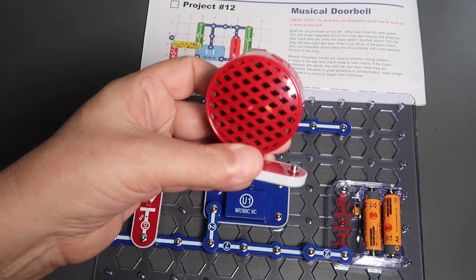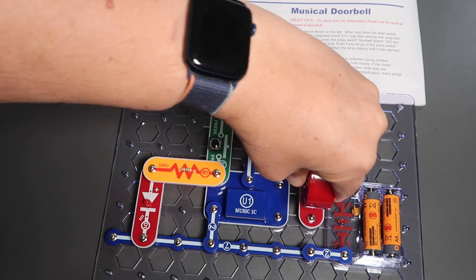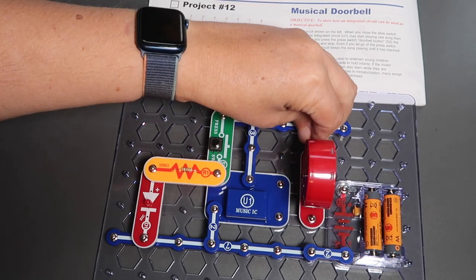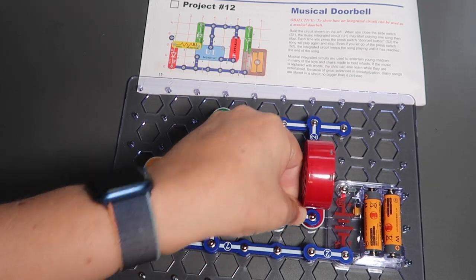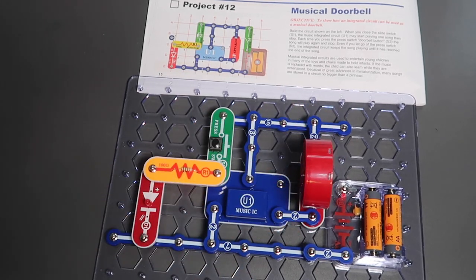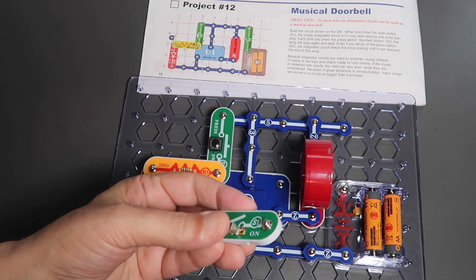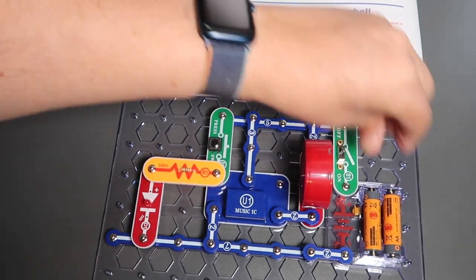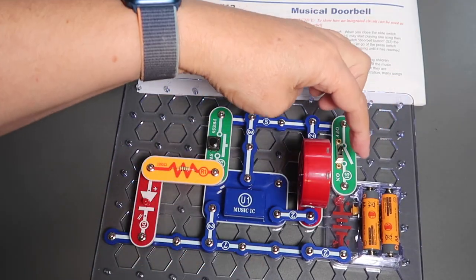And then we have the speaker. Big, chunky, loud speaker. Which appears to go here. Like so. And then we have switch one, which is the switch we used before, the slide switch. I'm going to have it off. Which is what's controlling power to the entire circuit.